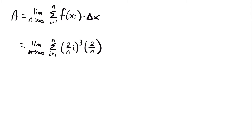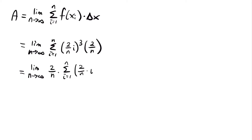The first thing to do is pull out everything from the sum that doesn't involve i. When looking at a sum, we're only plugging in values for i, so we can factor out anything else — like the 2/n from delta x. This gives us the limit as n approaches infinity of 2/n times the sum from i equals 1 to n of (2/n times i)³. We can't pull it outside the limit because it contains n, which is approaching infinity.